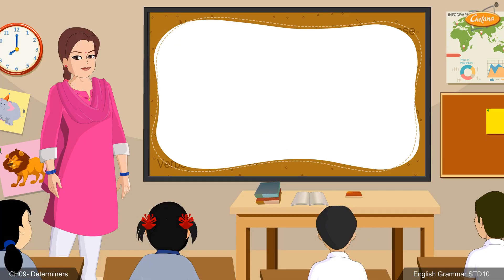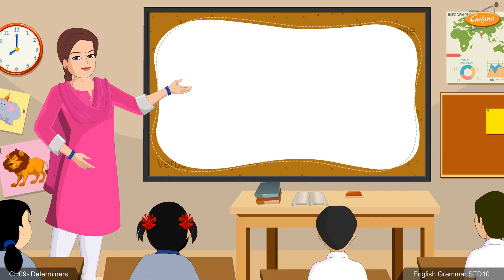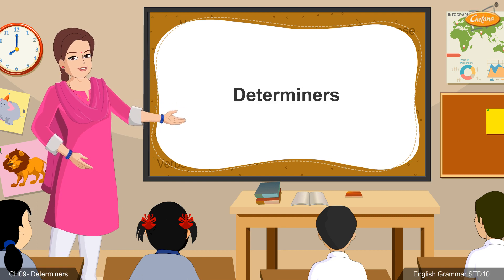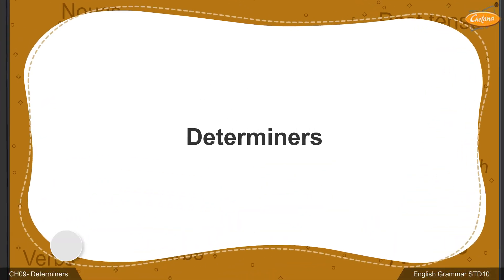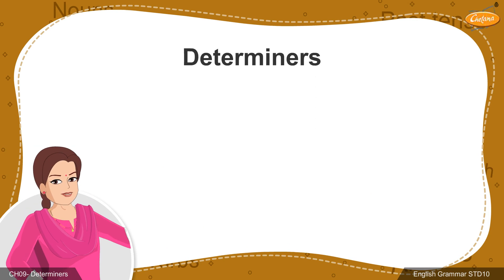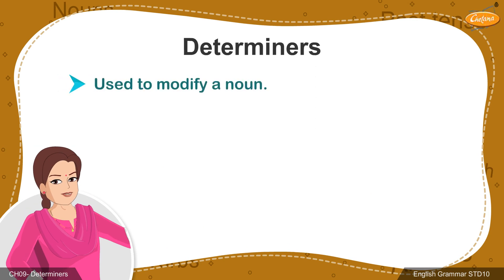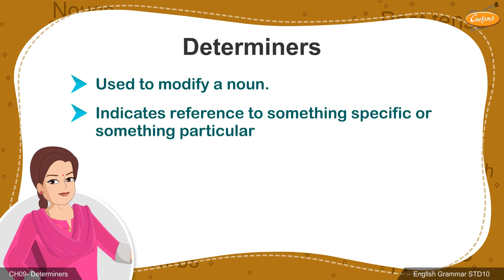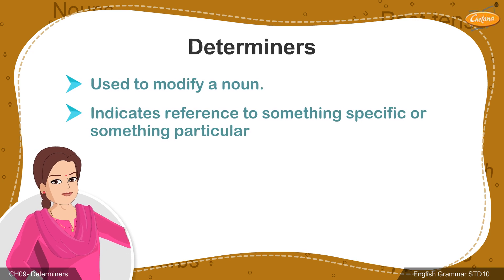Good day students. Today we will be dealing with the concept of determiners. Let's dive right into it. A determiner is a word used to modify a noun. It helps to refer to something specific or something of a particular type.